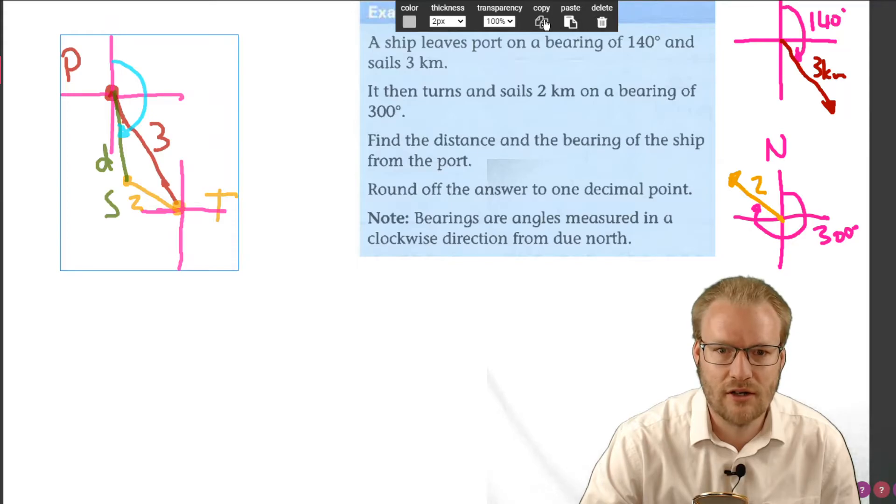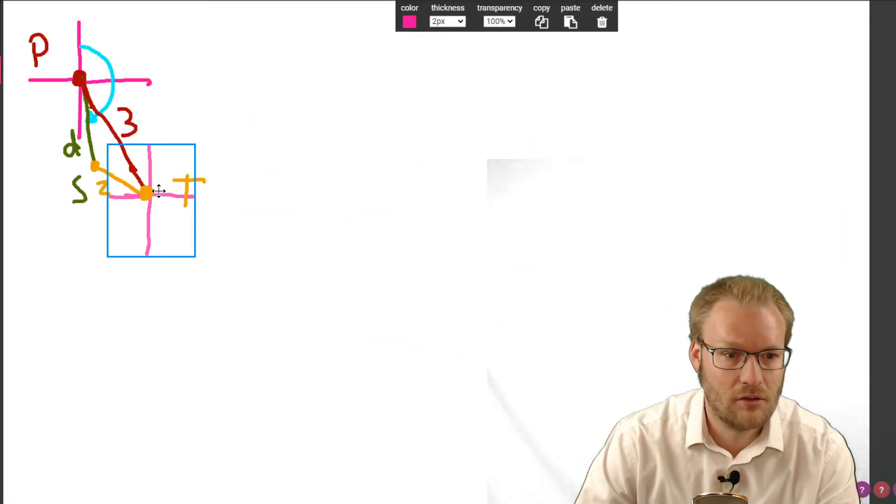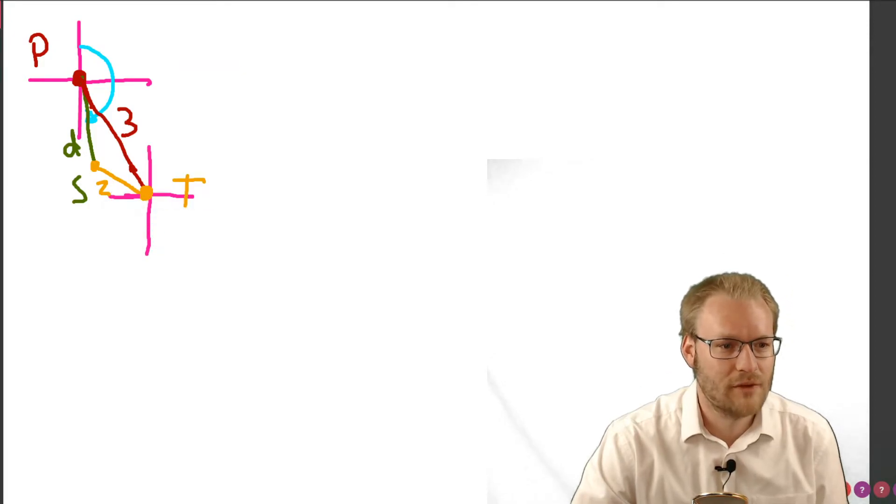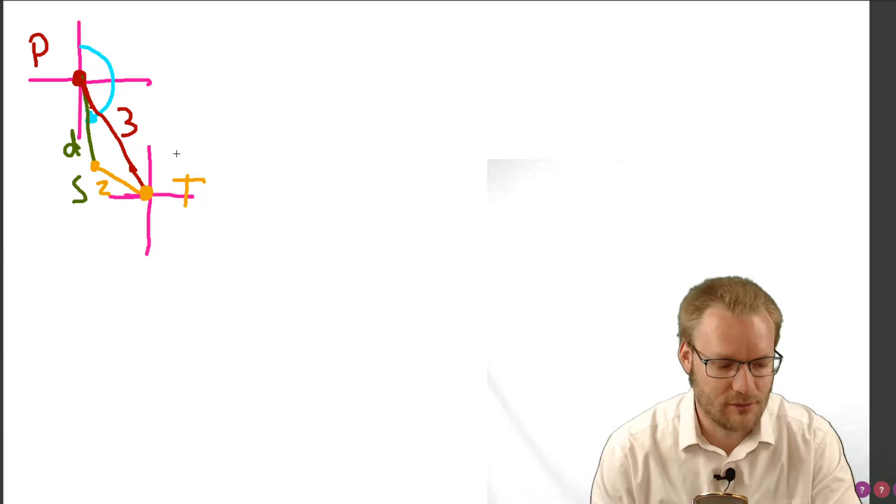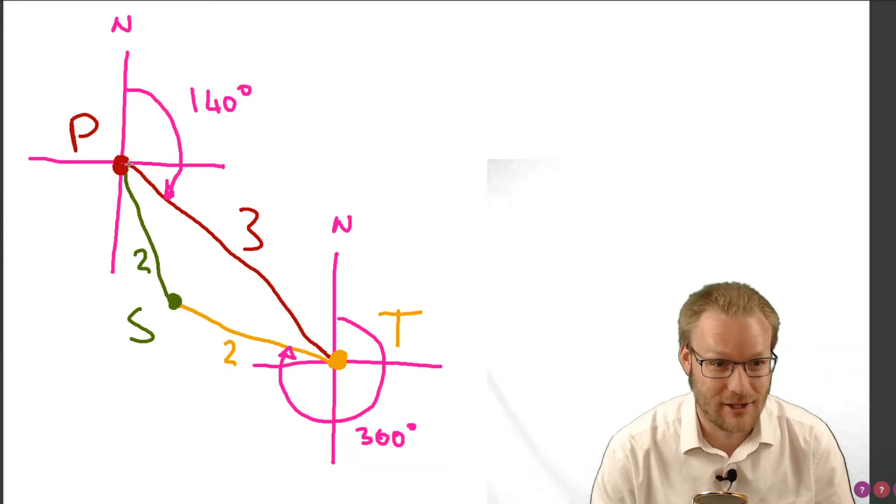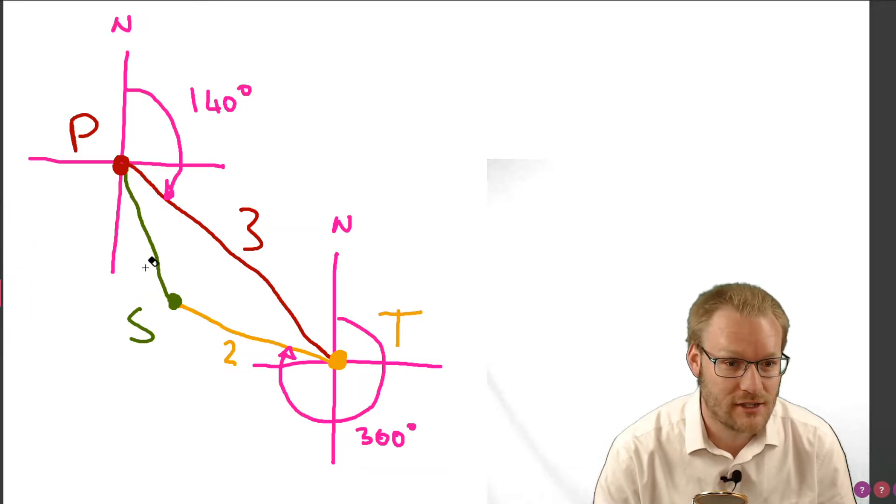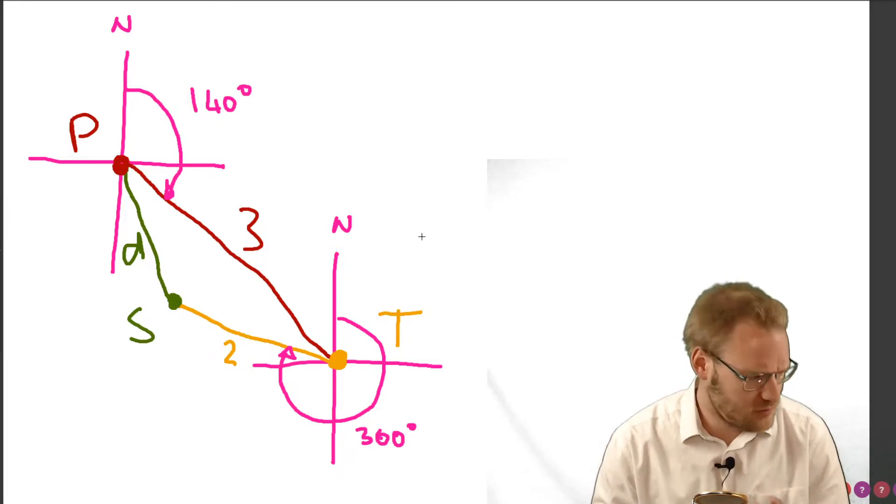I'm going to make copies as we go so we can keep track of our progress. I'm just going to quickly redraw this picture so it's a bit bigger. We've got our diagram. We're going from port to where the ship turns, and then the ship is sitting over here. We need to find this distance d and we also are going to need to find this bearing, so from port to the ship, what that is there.